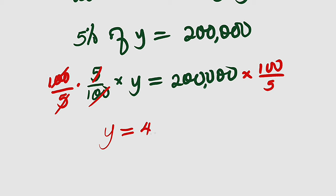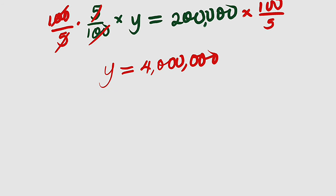Then lastly we need to find 50 percent of y and that's exactly what we are looking for. 50 percent of y, this is equal to what? 50 divided by 100 of its multiplication and y is 4 million.